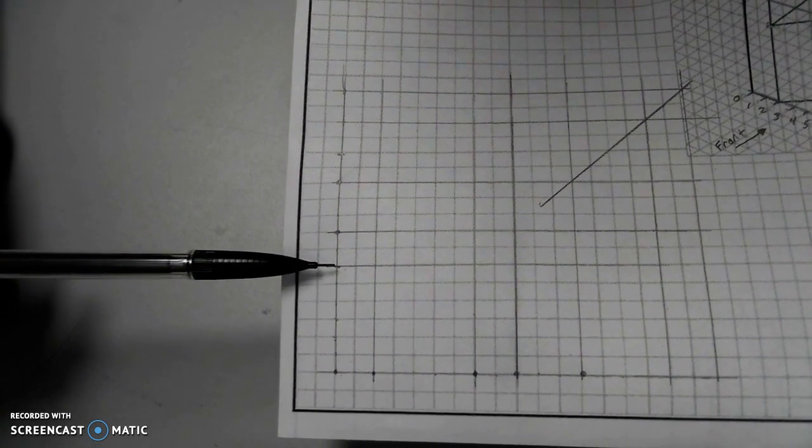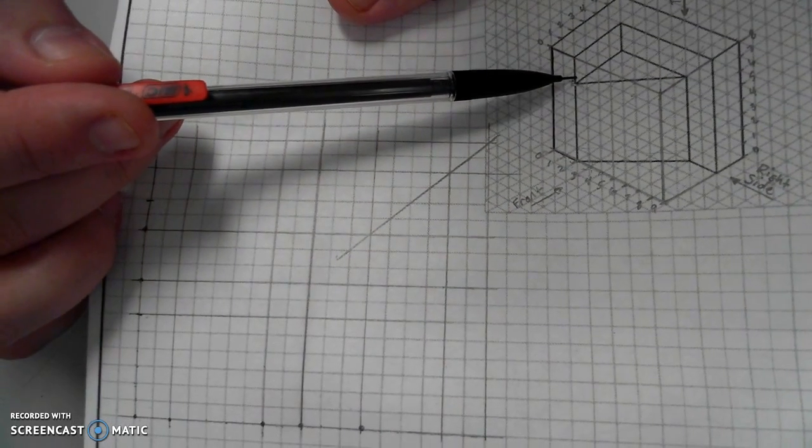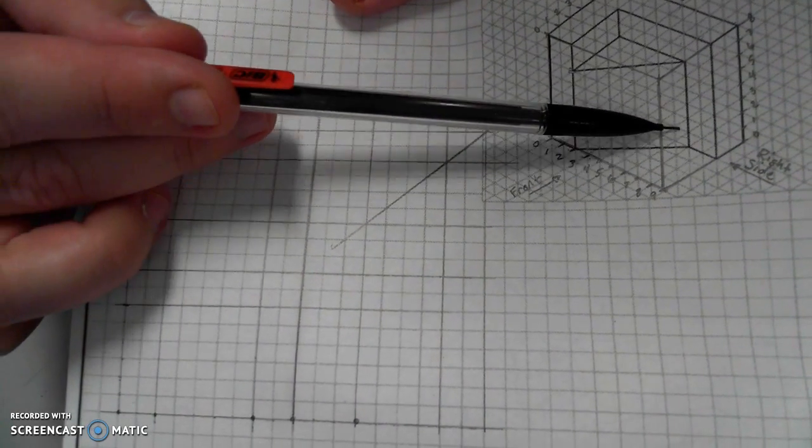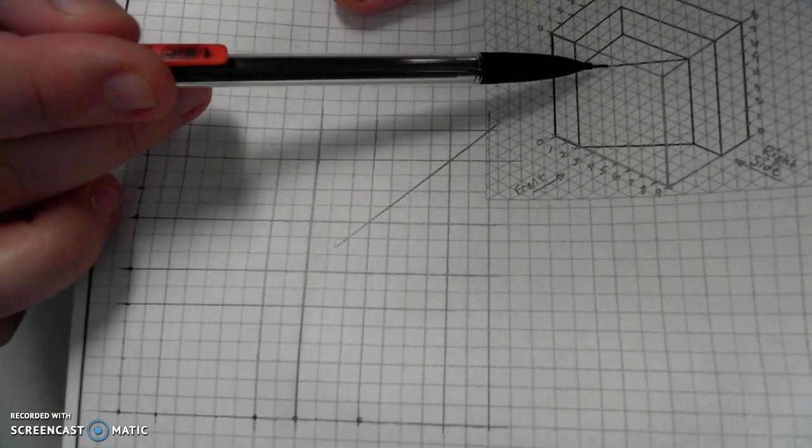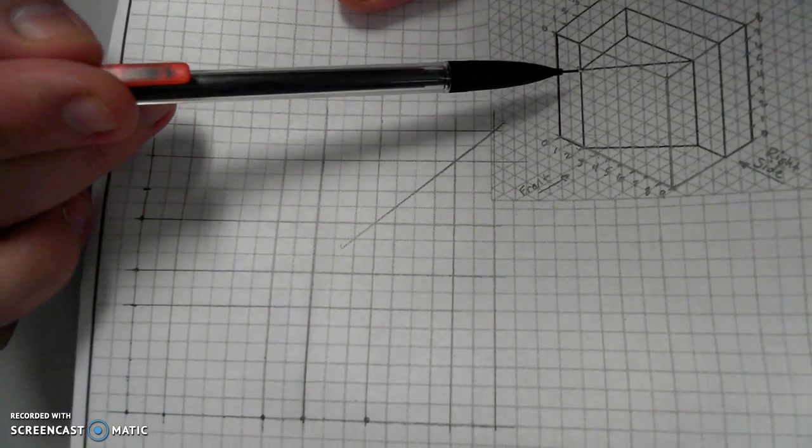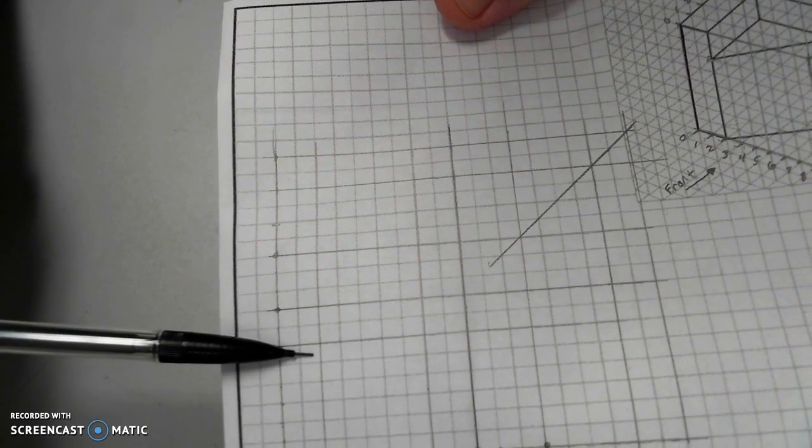That 6 is going to be very important for where I want to see this triangular face start. So this entire angled face that makes up that angled edge in the front view, I need to see where it starts. So that's what this line will represent at 6 units up.